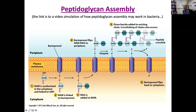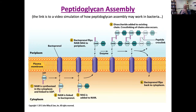To reiterate: the production of new peptidoglycan happens by new strands being inserted between pre-existing strands by breaking the crosslinks, inserting new chains, and then adding new crosslinks to accomplish the actual growth of the cell.